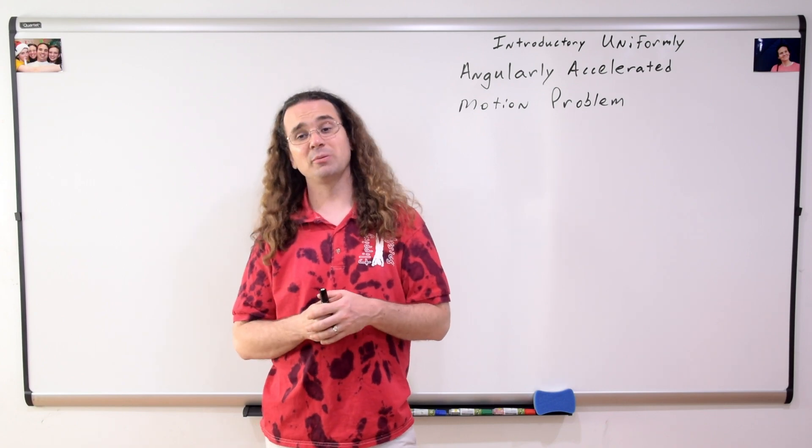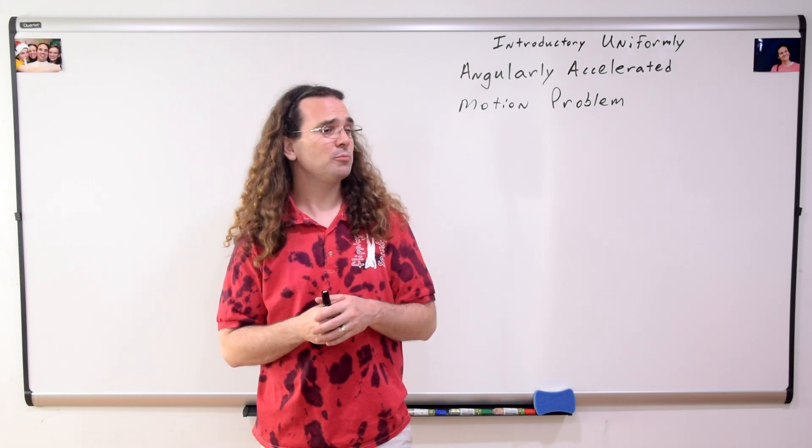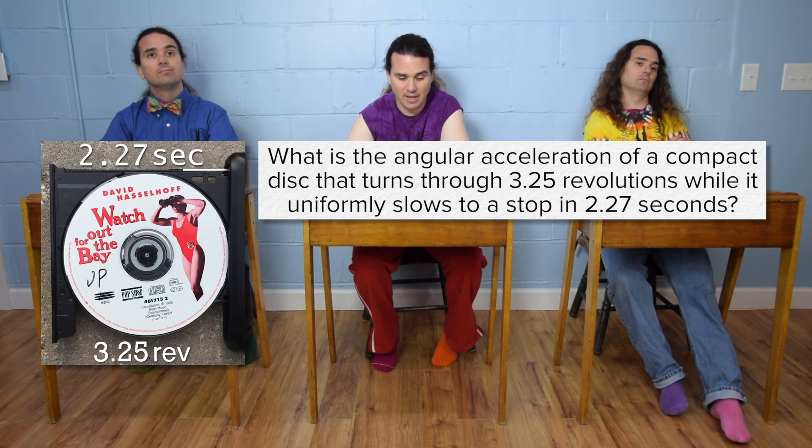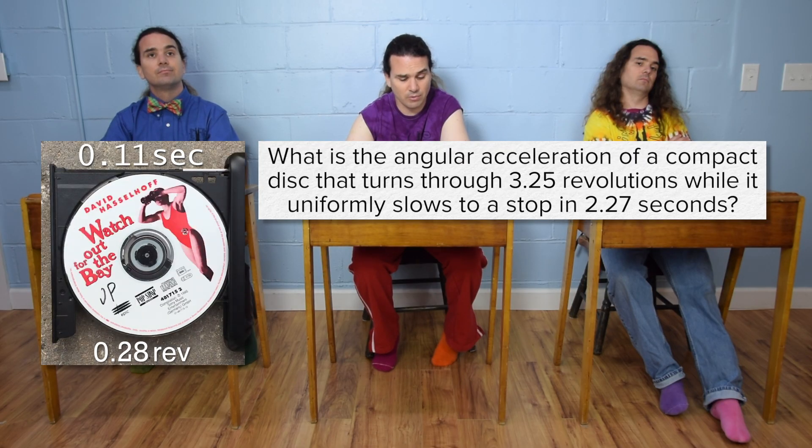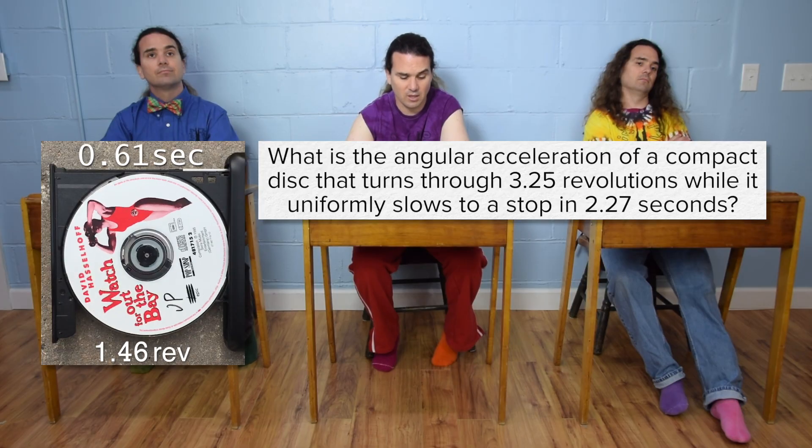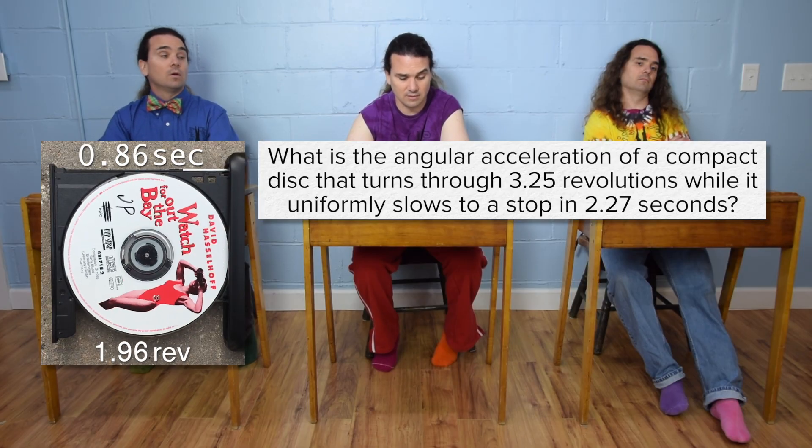Good morning. Bobby, could you please read the problem and Billy, could you please translate? Flippin' physics! What is the angular acceleration of a compact disc that turns through 3.25 revolutions while it uniformly slows to a stop in 2.27 seconds?